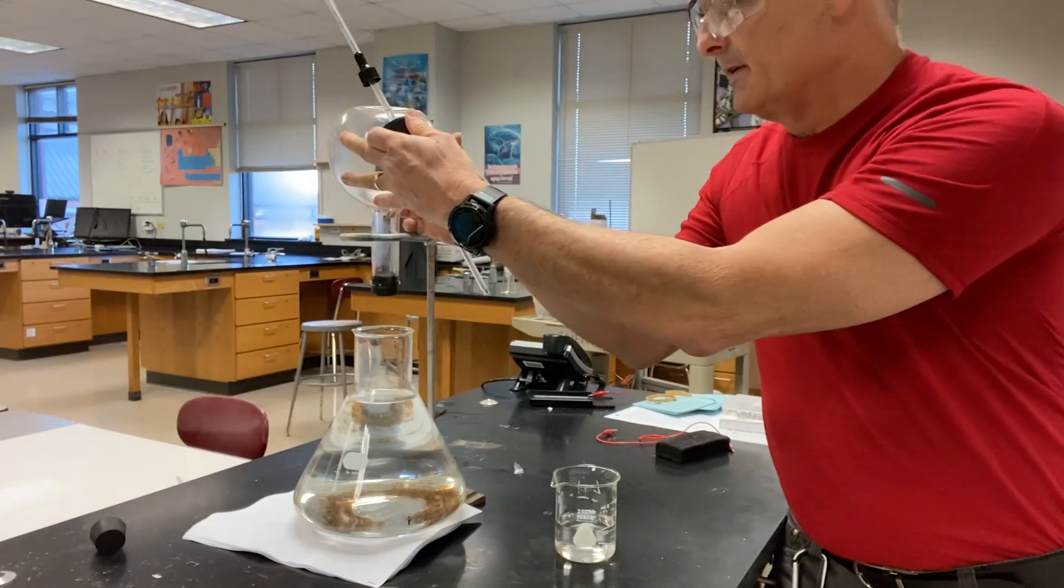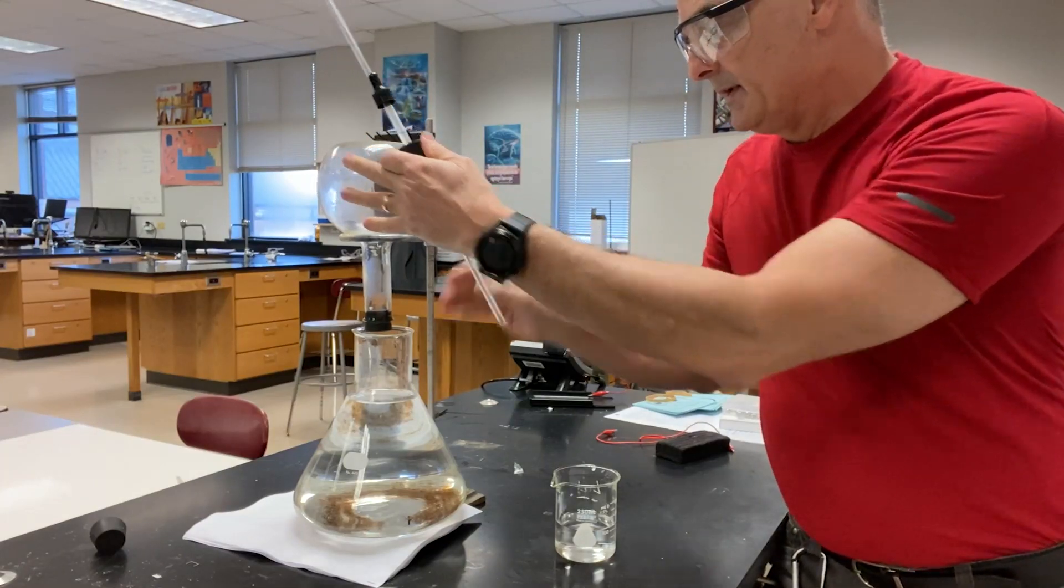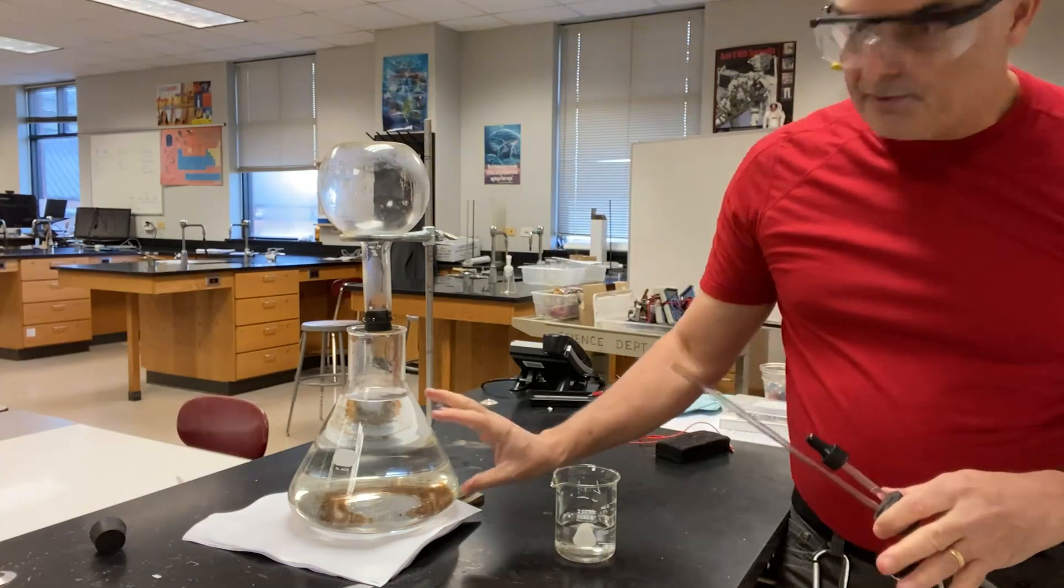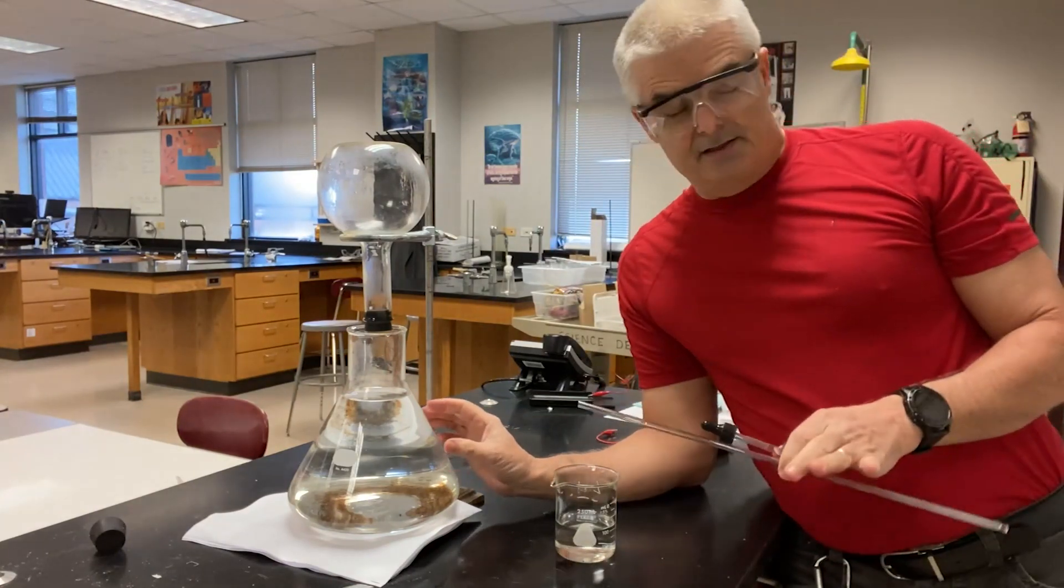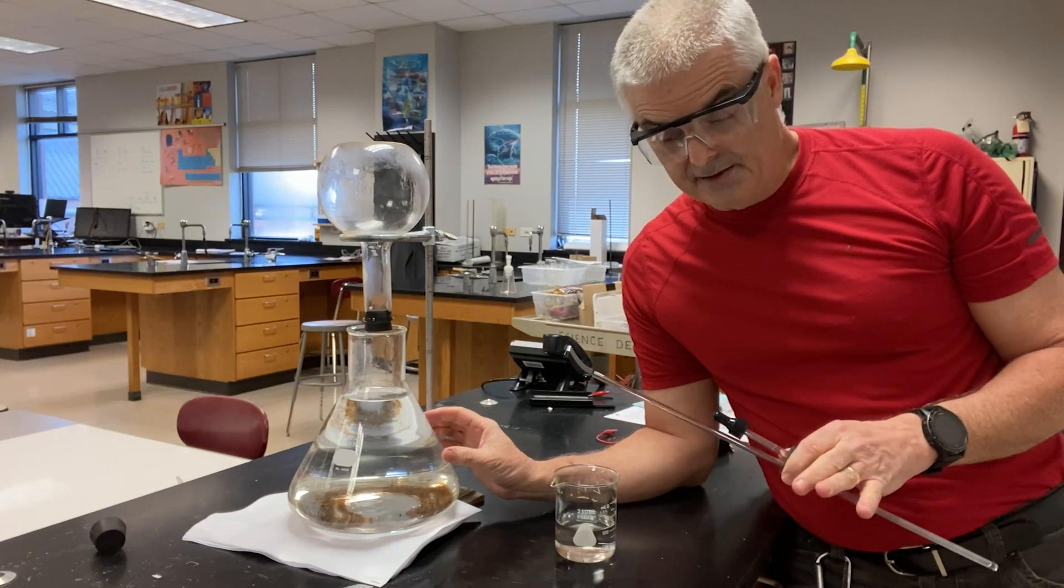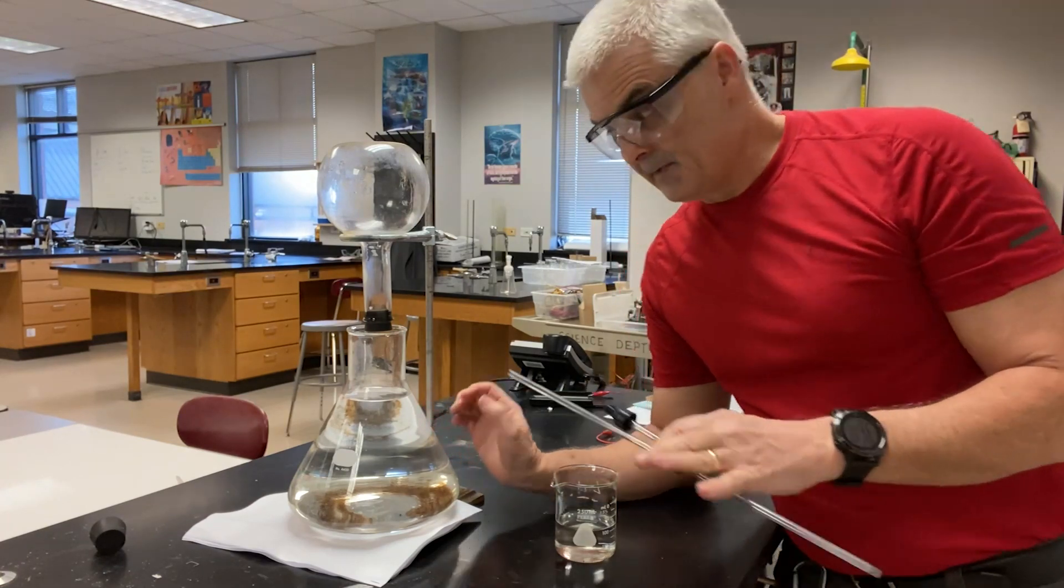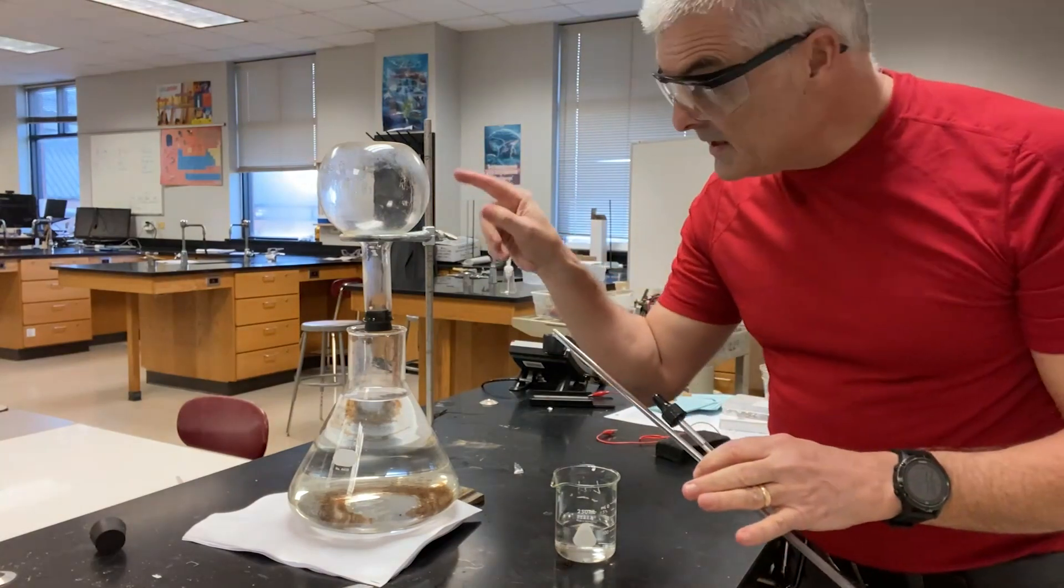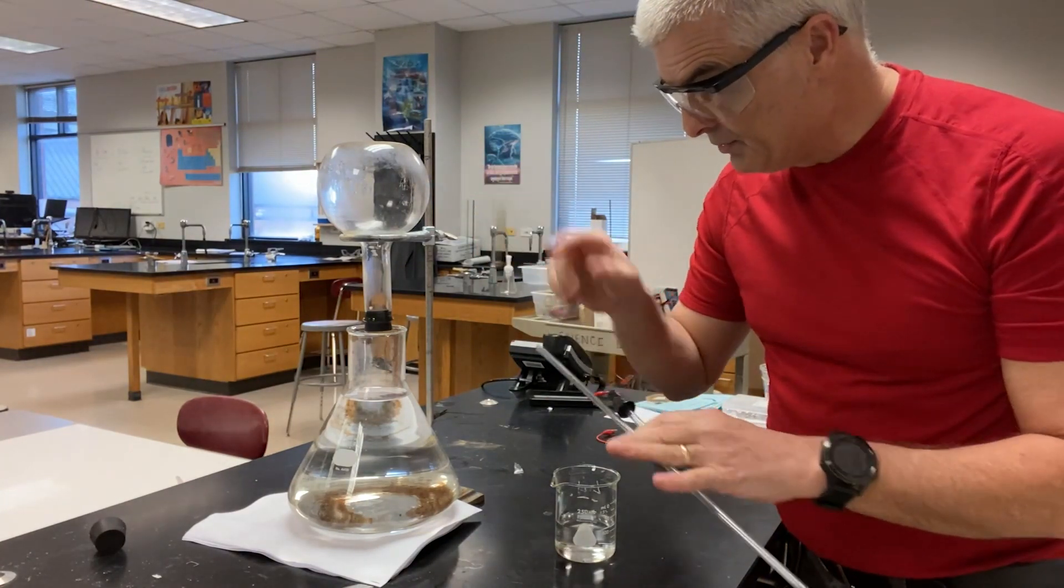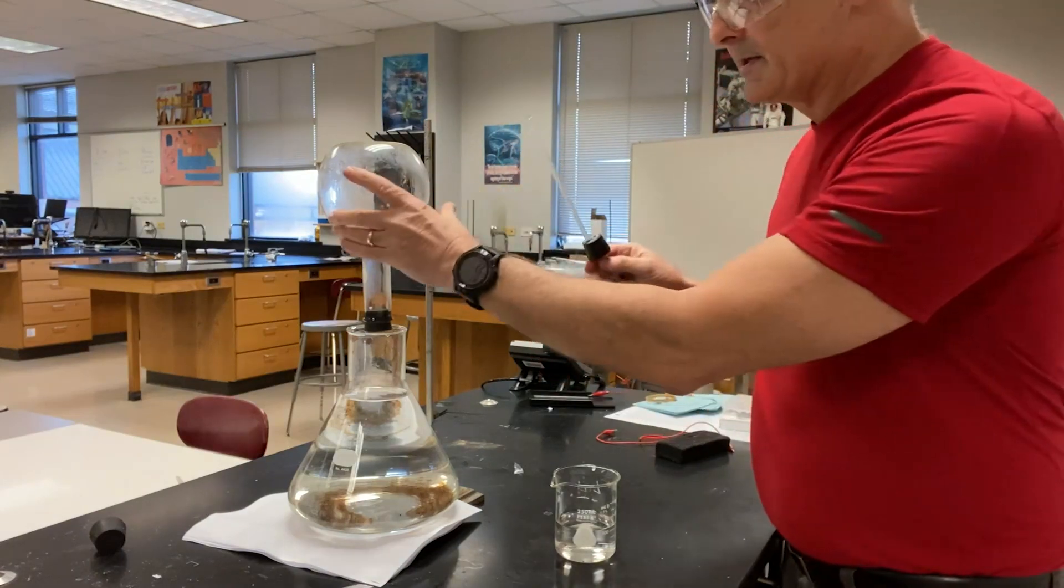And then what I'm gonna do is I'm gonna take this flask right here. I'm gonna put it inside the ring stand. Now this large flask is filled with water, and I've put a few drops of phenolphthalein in there. We'll explain the chemistry of it afterwards. So remember, what's in this flask is ammonia gas, almost completely ammonia gas.